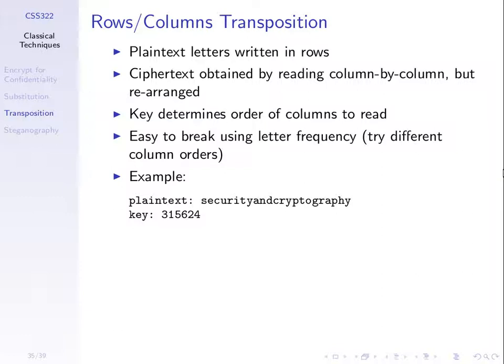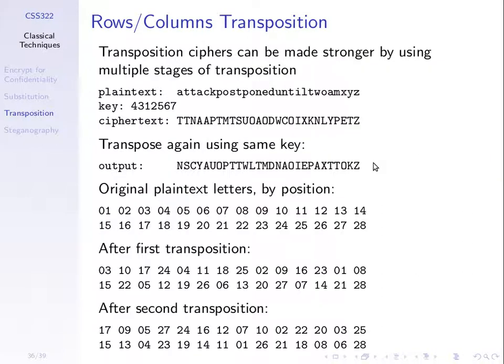Let's summarize with a couple of concepts. This illustrates a concept used in real ciphers using the rows-columns transposition. The original plaintext was 'attack postponed until 2am', padded with XYZ. With key 4,3,1,2,5,6,7, we applied the rows-columns transposition: we wrote the plaintext across 7 columns row by row — 7 because the key contains numbers 1 to 7 — then read column by column. Encrypting gives us the ciphertext starting with T, T, N, A, and so on.